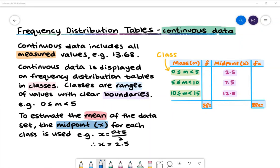Similar to frequency tables for discrete data, we have columns for frequency and the frequency multiplied by x.